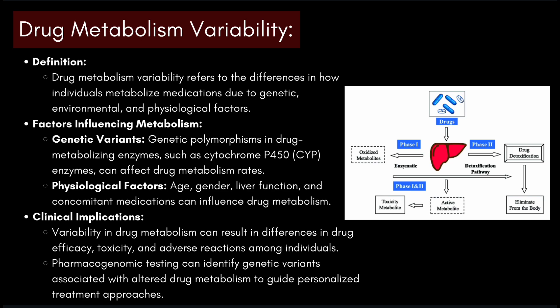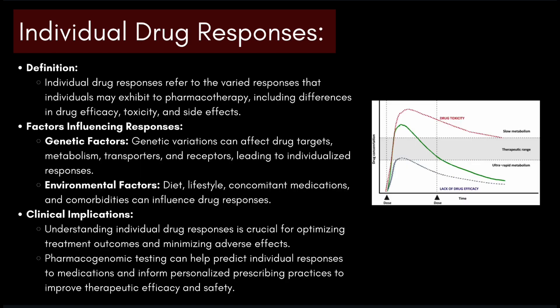Physiological factors include age, gender, liver function, and concomitant medications that can influence drug metabolism. Some clinical implications include variability in drug metabolism that can result in differences in drug efficacy, toxicity, and adverse reactions among individuals. Pharmacogenomic testing can identify genetic variants associated with altered drug metabolism to guide personalized treatment approaches.